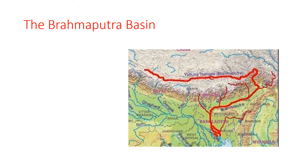The Brahmaputra Basin: the Brahmaputra River originates in Tibet, where it is called the Yarlung Tsangpo. In Arunachal Pradesh, after the convergence of the Lohit and Dibang rivers, it is named the Brahmaputra. Finally it enters Bangladesh and falls into the Bay of Bengal. This region of India is very fertile due to heavy rainfall and is called the Food Bowl of India. The Brahmaputra is the longest of the three rivers of North India.